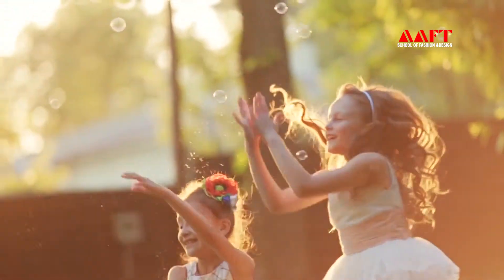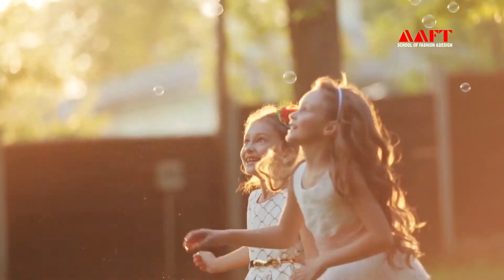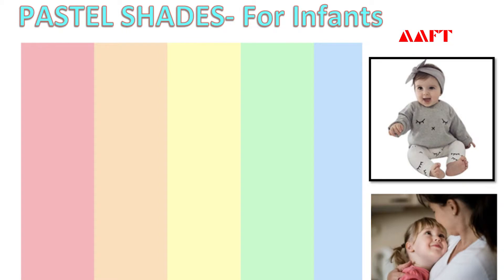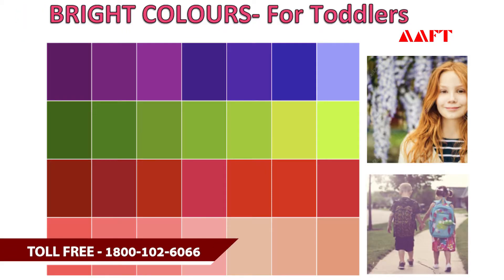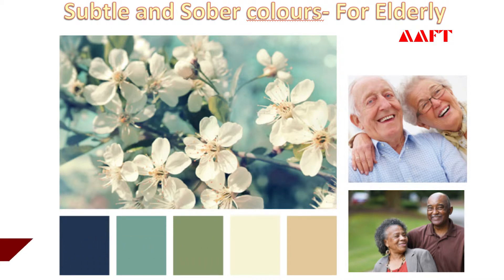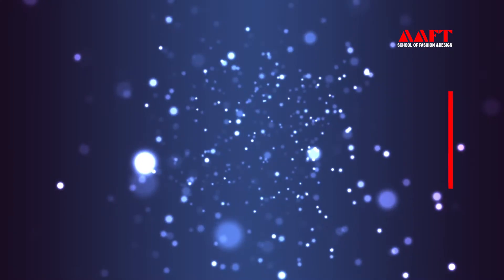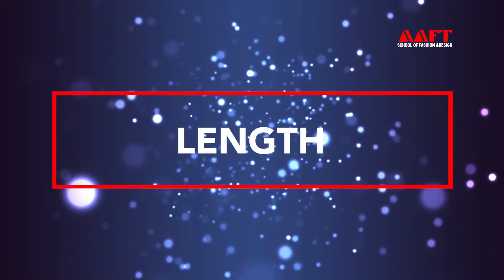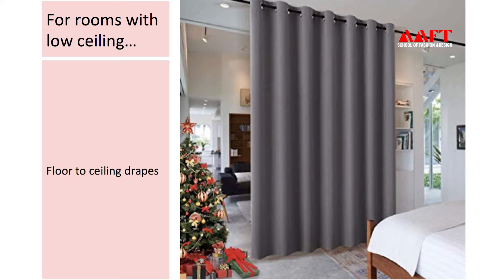Point number three under color and design is age group. An infant's room will have more pastel shades, and a room for a toddler needs to be bright and colorful, whereas if we are designing a room for the elderly, we will choose subtle or sober colors.